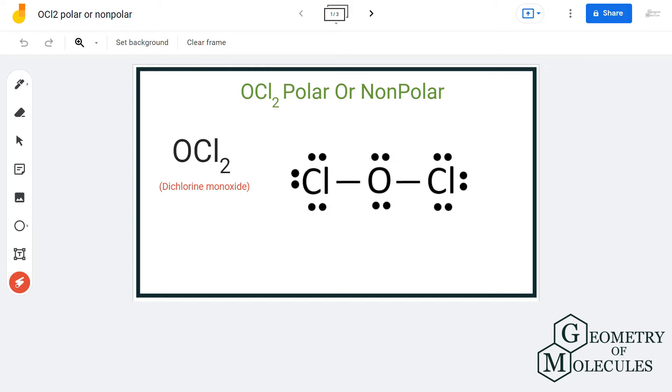But you really need to look at its 3D structure or the molecular geometry to understand the shape of the molecule. If you look at this molecule in 3D or look at its arrangement, it is a bent molecule.